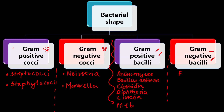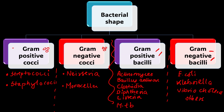Examples of gram negative bacilli include Klebsiella, Helicobacter, Campylobacter, Vibrio cholerae, and Legionella — multiple examples can be added. With this, we mark the end of bacterial shapes.